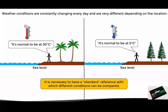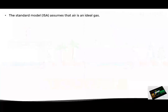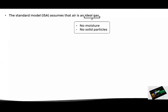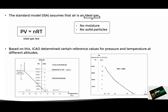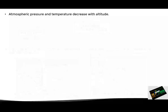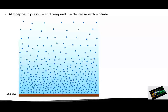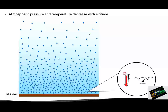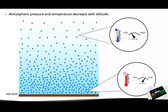With this in mind, let's look at the principles and characteristics of the ISA model. This model assumes that air behaves as an ideal gas, so it is assumed to be free of moisture and suspended solid particles such as dust or sand. Obviously this is not the case in practice, but these assumptions help in the development of the model. So based on this, the ICAO determines certain reference values for air pressure and temperature at different altitudes. However, before going into detail with these, we must say that in general terms, pressure and temperature decrease with increasing altitude. In other words, at sea level we will find a higher pressure and temperature than at higher altitudes.